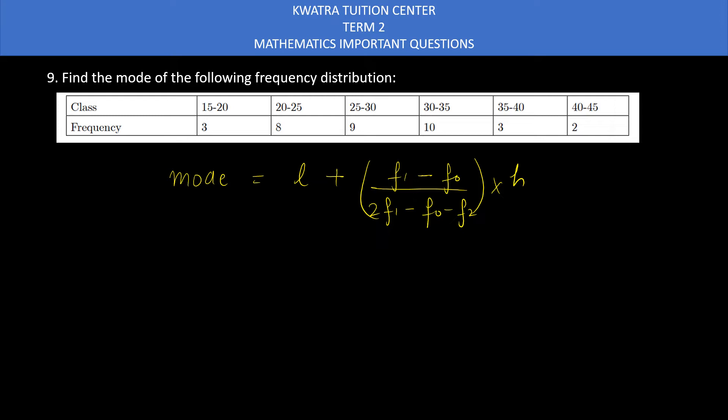Now, substituting all the values — first of all, let us start with the modal class. What is the modal class? It is the class with the highest frequency. Here you will see, when is the highest frequency? It is 10. So what is opposite to 10? That is our modal class.